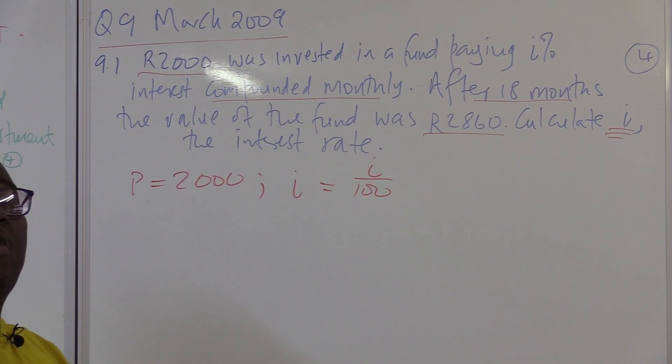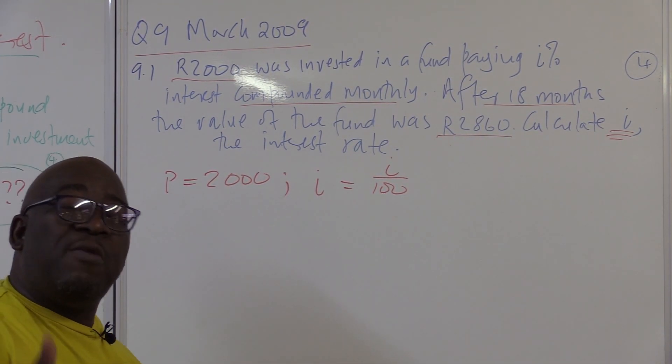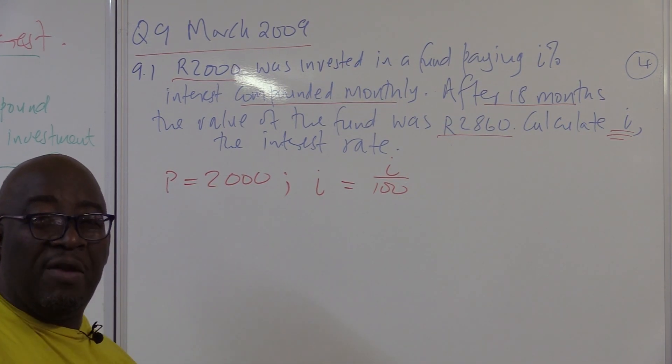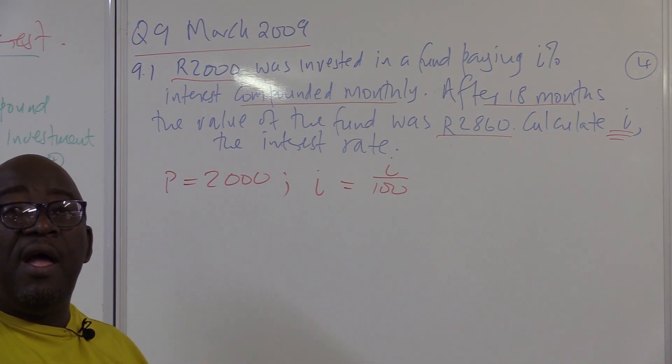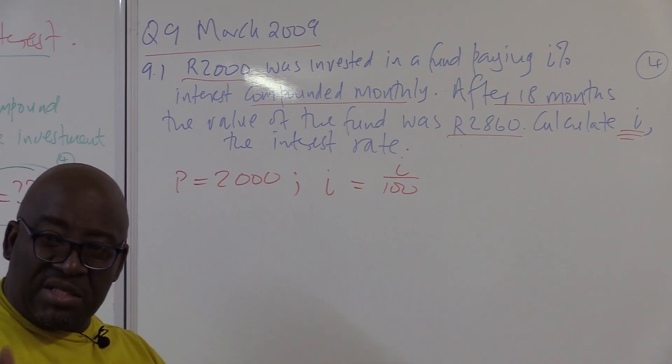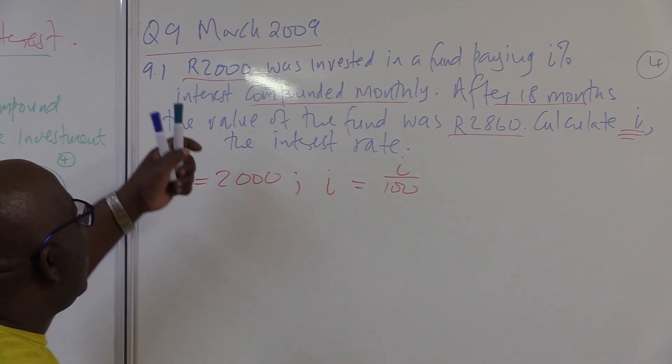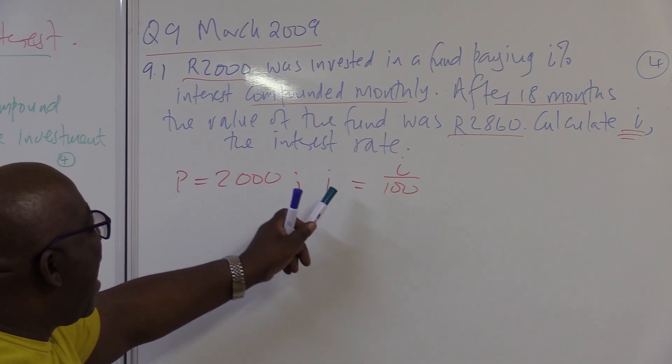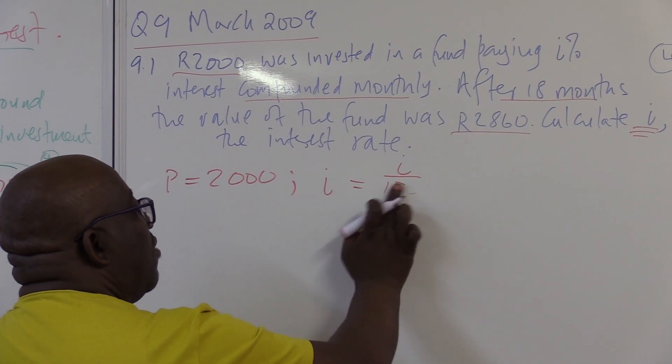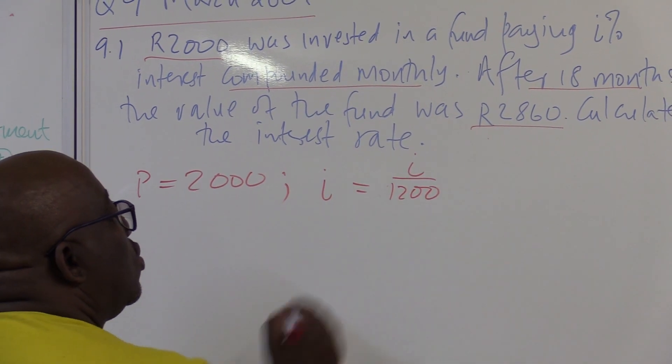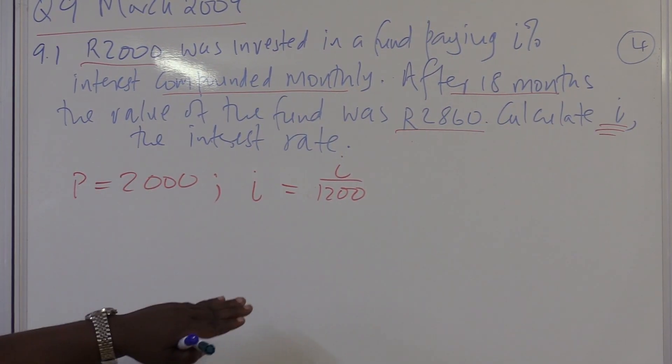Interest compounded monthly. What does compounded monthly mean? Remember in our introduction, we said when it is compounded monthly, you go to your I, you divide it by 12. You go to your N, you multiply it by 12. So it's I over 1200. You work with 1200 a lot in these sections when it is compounded monthly. That's what we're looking for.